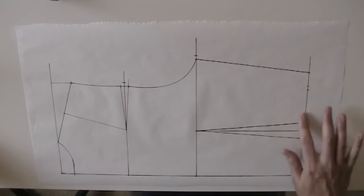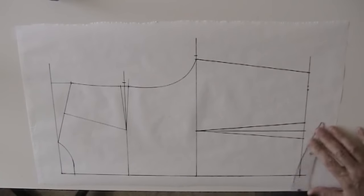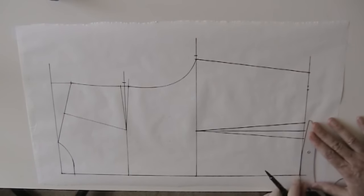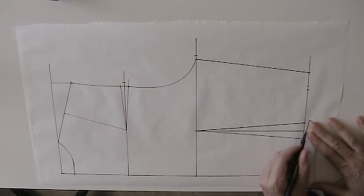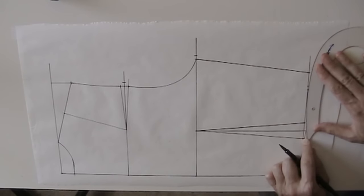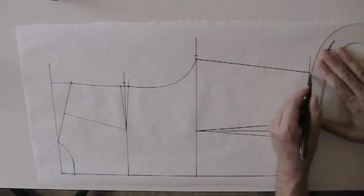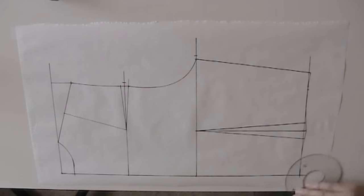You may want to go ahead and true up your dart line down here. You can fold it in the traditional way, or I've had enough practice that I can just take my French curve and just smooth it out. You'll also need a little bit of a come down there. Okay, our back bodice is finished.